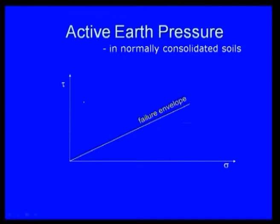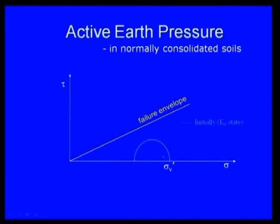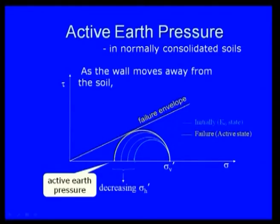For normally consolidated soil, drawing the Mohr circle for active earth pressure: the initial state is the K0 condition — earth pressure at rest. Once soil movement starts, sigma H prime decreases. On the Mohr circle, sigma V prime stays fixed while sigma H prime decreases. Failure occurs when the Mohr circle touches the failure envelope. This Mohr circle condition represents active earth pressure.